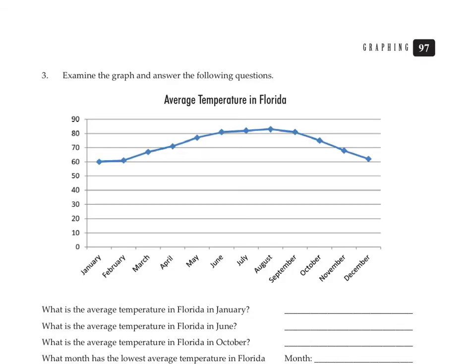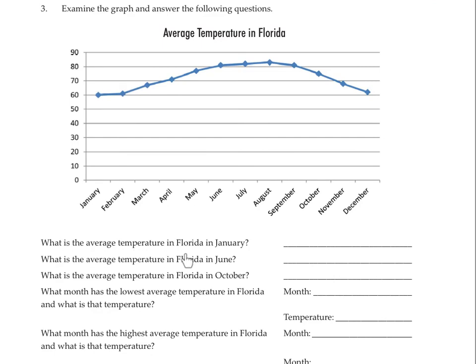We're going to examine the graph and answer the following questions. Here we have the average temperature in Florida, January through December, plotted starting at zero degrees going up to 90 degrees. What is the average temperature in Florida in January? We're going to go to January, this tick mark right here, and follow it up. The average temperature is about 60. The average temperature in February, right here between the tick marks, is more than 60, so maybe we'll say 62.